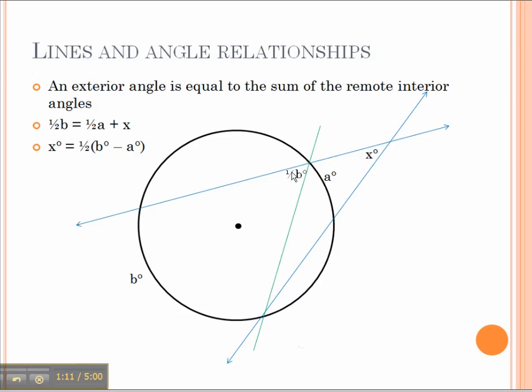This inscribed angle created here becomes half the measure of arc angle B, as we discussed in a previous slide, that inscribed angle is half the measure of the intercepting arc angle. Also, another inscribed angle was created here, creating half the measure of this arc angle B.